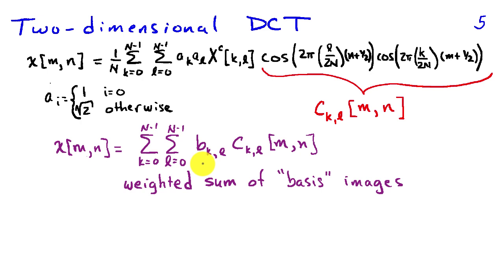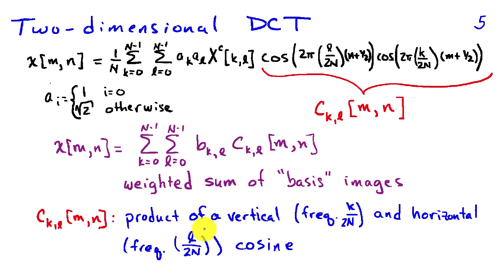The weights are the discrete cosine coefficients, the x superscript c, as well as these other factors, the a's and the n in the denominator. And these basis images, the c sub k, l of m, n, are the product of a vertical cosine with frequency k over 2n and a horizontal cosine with frequency l over 2n.